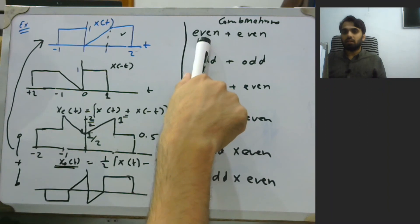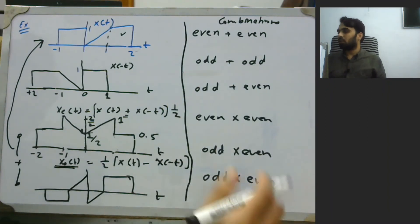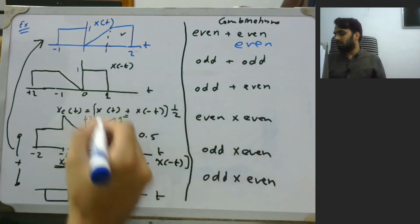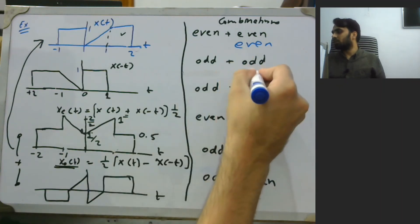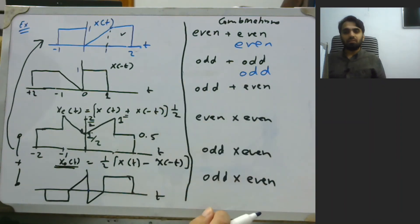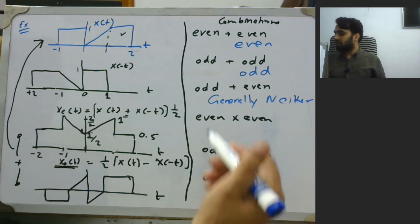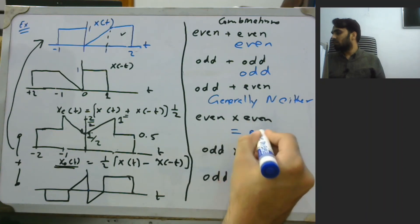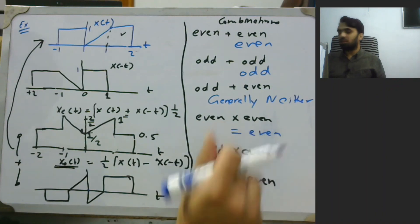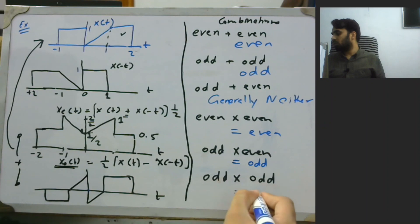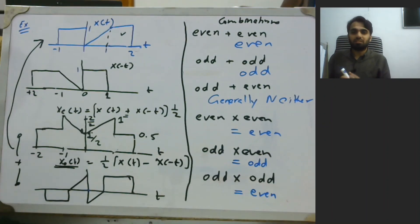Next, we have some interesting combinations. If you add an even signal with another even signal, the result is an even signal. If you add an odd signal with another odd signal, the result is an odd signal, since all odd signals must pass through zero. If you add an odd signal with an even signal, the result is generally neither even nor odd. For multiplications: even times even gives an even signal; odd times even gives an odd signal; and odd times odd gives an even signal. These are the key outcomes when combining signals that are either even or odd.